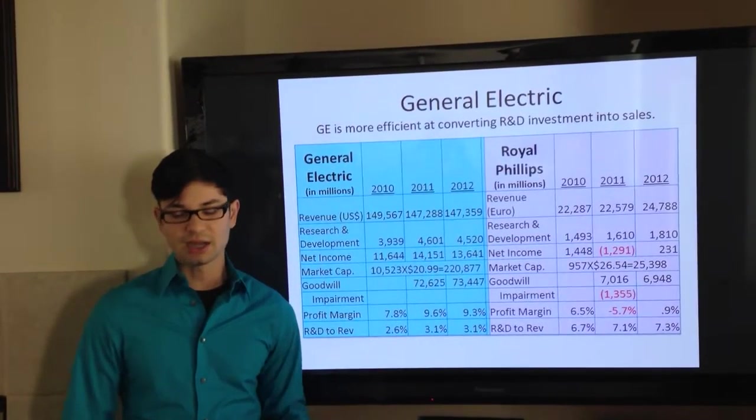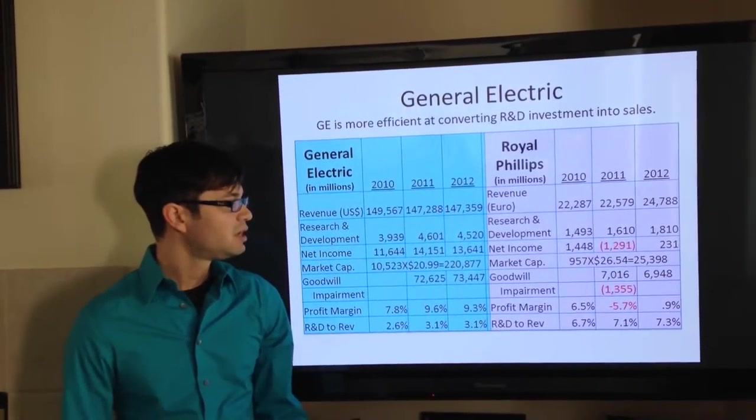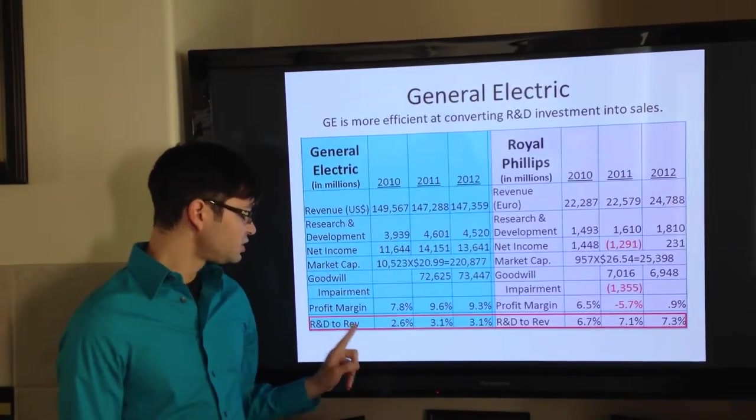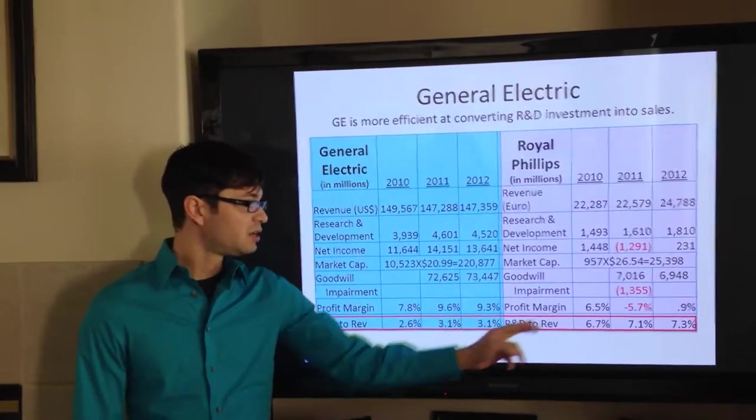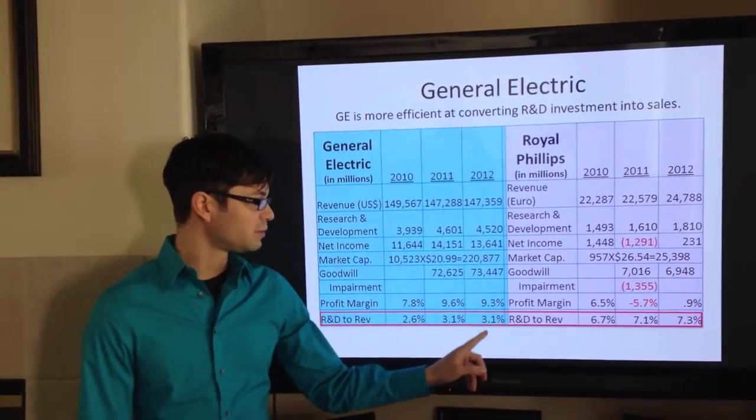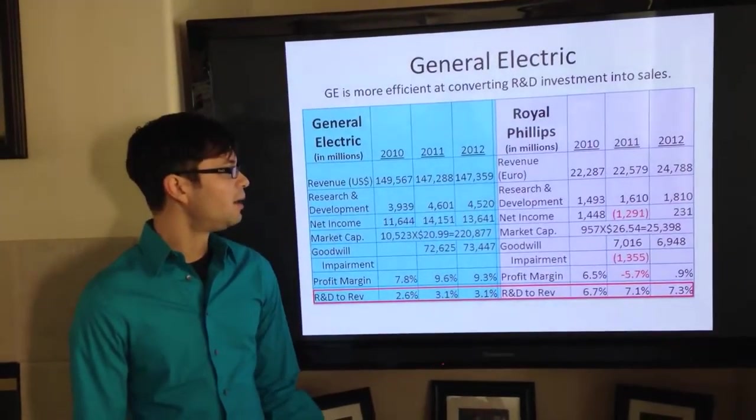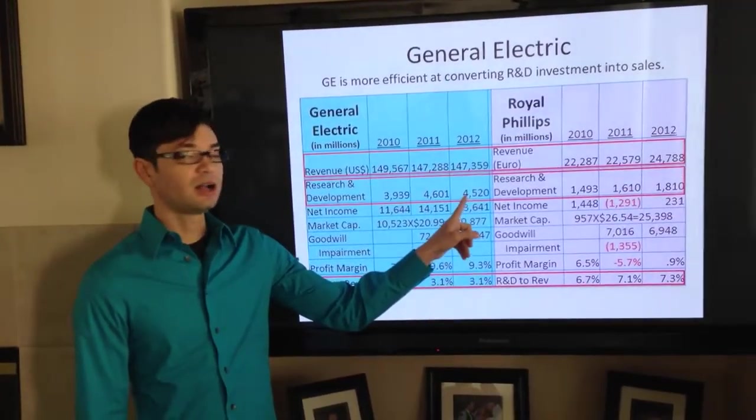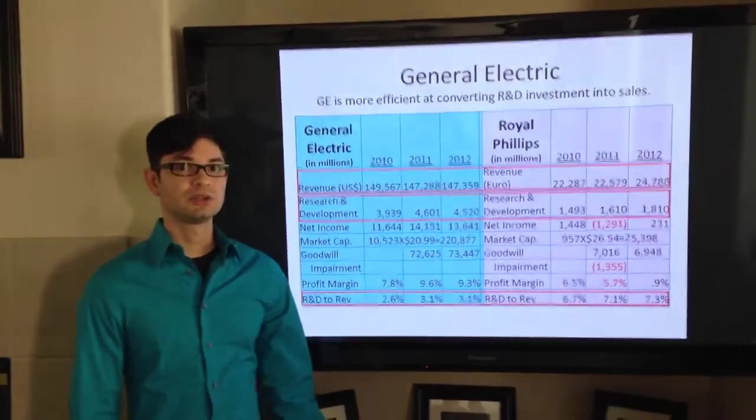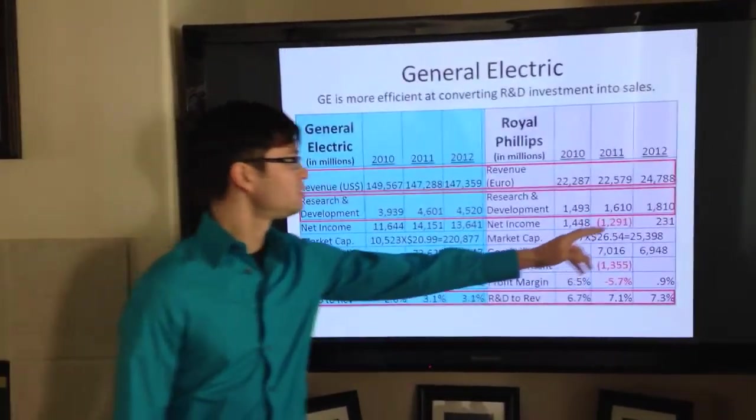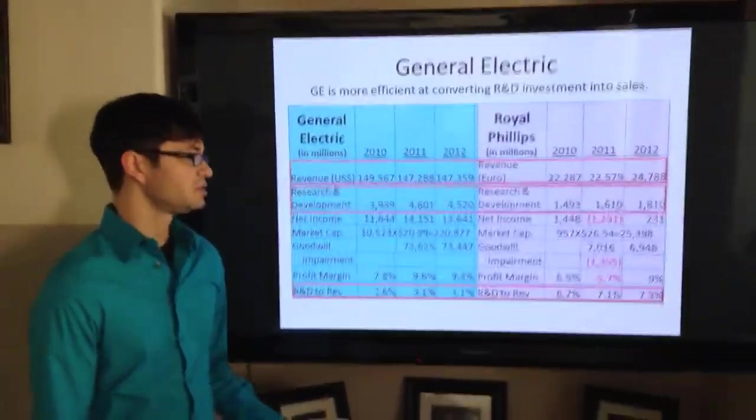This is the comparative analysis between General Electric and its closest competitor, Royal Philips. As you can see here, the research and development department of General Electric is actually twice as efficient than Royal Philips with 3.1% compared to 7.3% of income going towards research and development. This shows here that for every dollar that General Electric invests in R&D, they're able to generate almost $30 in sales compared to General Philips which only gets about $12 for every dollar it invests in research and development.